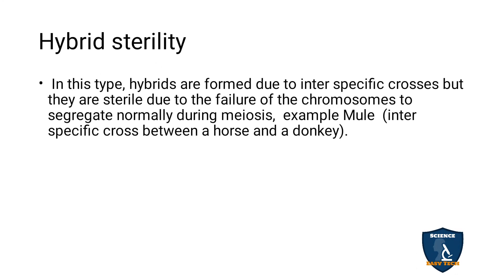Hybrid sterility: hybrids are formed due to interspecific crosses, but they are sterile due to the failure of chromosomes to segregate normally during meiosis. Example: the mule, an interspecific cross between a horse and a donkey. The mule is produced but it is sterile — it won't give birth to any young ones. This is called hybrid sterility.